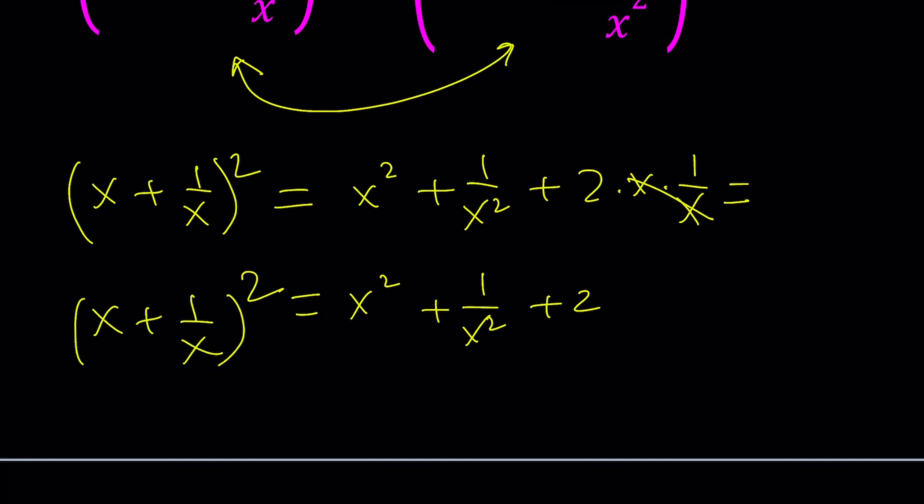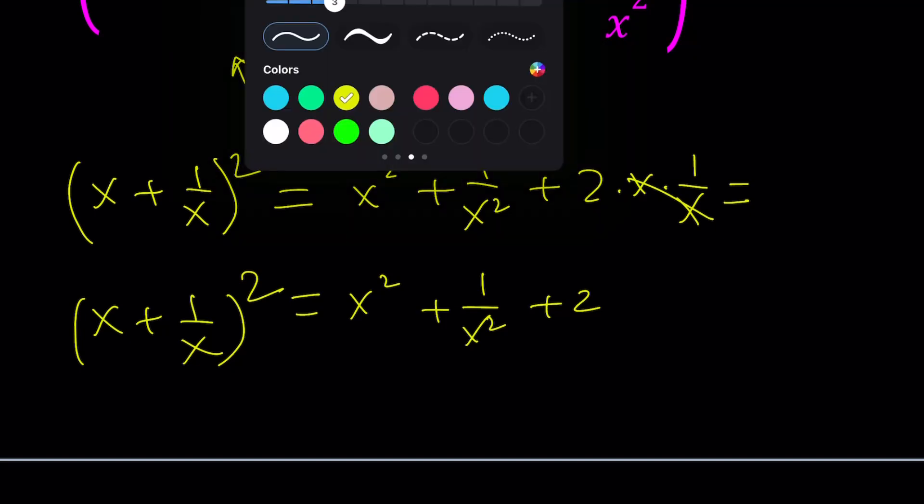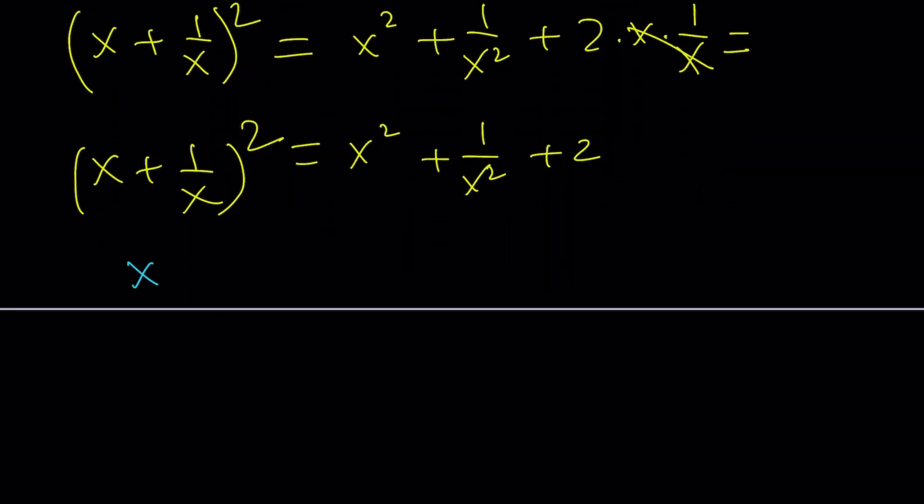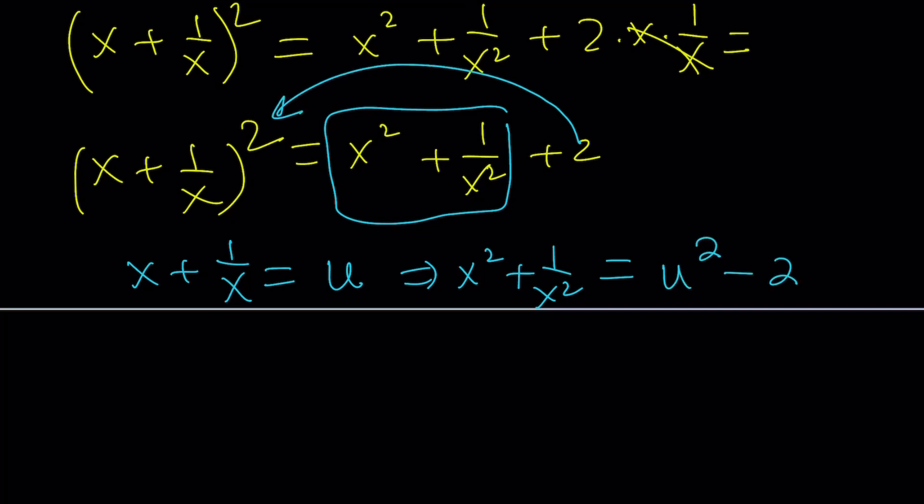And you could also memorize this as a formula, because this would be super helpful. So suppose x plus 1 over x equals u. We haven't used u for a while. We use t a lot. Let's use u this time. So if x plus 1 over x is u, then x squared plus 1 over x squared is going to be what in terms of u? You can isolate this, subtract 2, you're going to get u squared minus 2. That's what's beautiful about these identities.